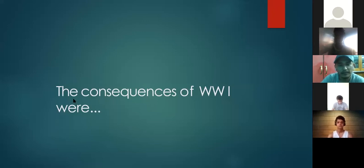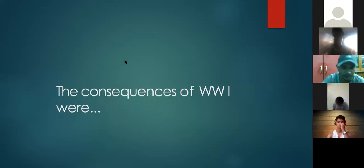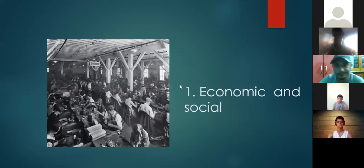In 1917, Russia left the battle as it was going through a civil war. Ultimately in 1918, the war ended with an armistice, leading to the Treaty of Versailles, which gave way to the League of Nations. Let's look at how the war ended and what the consequences were.